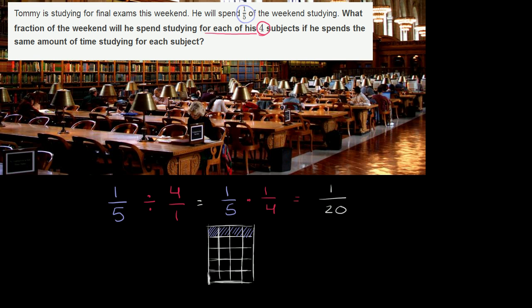So how much time does he spend on one subject? Well, on each subject, that would be this layer that I'm doing in yellow right over here. And what is that? Well, that's 1 over how many equal sections are there of that size in the weekend? Well, I've just drawn out the grid. You had five rows, and now you have four columns. So five rows times four columns, you have 20 equal sections.